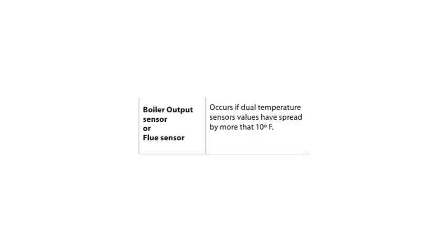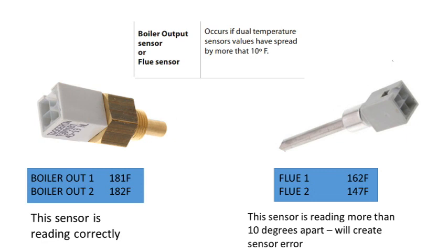We need to determine which sensor is giving us the problem and determine if it is actually a bad sensor or possibly something else causing the issue. Let's say we have come across a boiler output sensor or flue sensor fault. We see this occur if dual temperature sensors have spread by more than 10 degrees. It means these two particular sensors are both redundant sensors — they read the temperature twice, and if those two readings are more than 10 degrees apart, we get a sensor error.